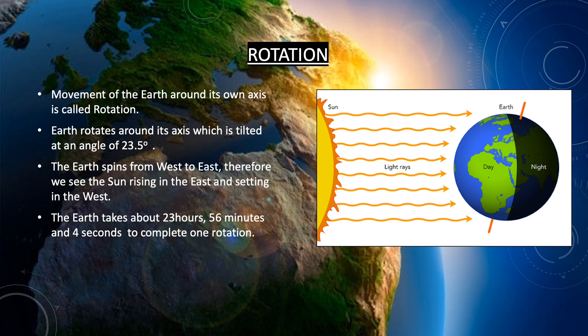The earth takes 24 hours to complete one rotation. But to be specific, it actually takes 23 hours, 56 minutes and 4 seconds to complete one rotation.